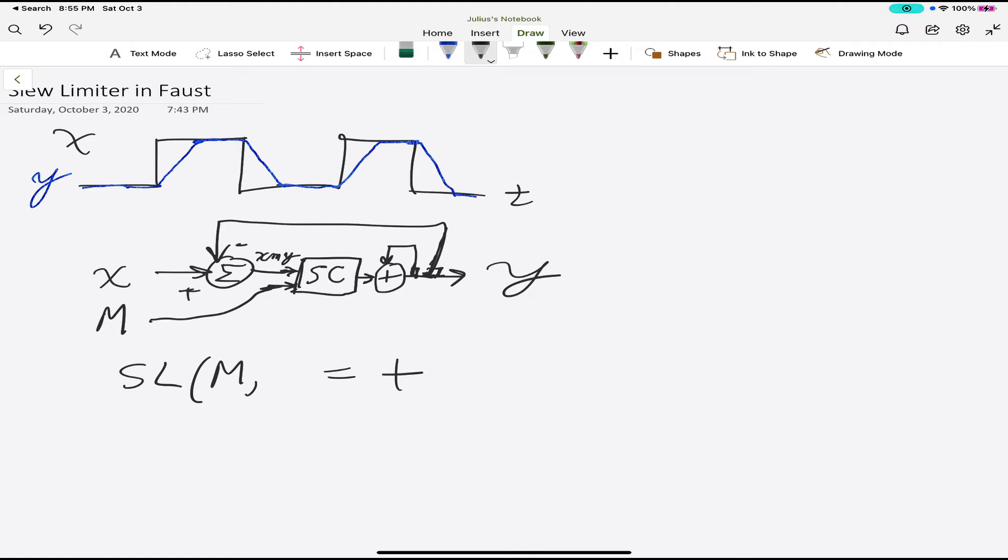And sometimes we need to explicitly name it and sometimes we don't. Let's see if we do or don't. So we're first going to run into a summer and so that we can write as plus. And then the output of the summer goes to the step calculator.